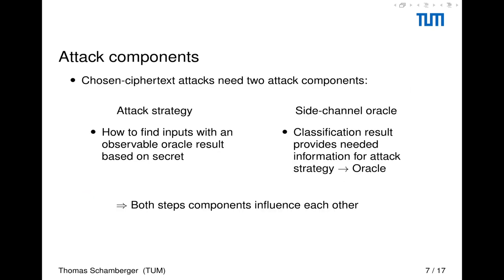For a chosen ciphertext attack, we need two attack components. And since these attack components are kind of dependent on each other, I have to make them clear. So we need the attack strategy. And with the attack strategy, we need to know how to find inputs with an observable oracle result based on a secret. So our inputs must have an effect that we can observe through our oracle. And we have the side channel oracle. This oracle gives us a classification result that we need in the attack strategy. It can be that for an attack strategy, we find different side channel oracles, or for different oracles, or for the same oracle, we find several attack strategies. Just that these two are interlinked and there can be different attack strategies and different oracles for each other.